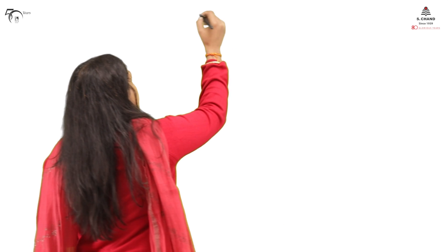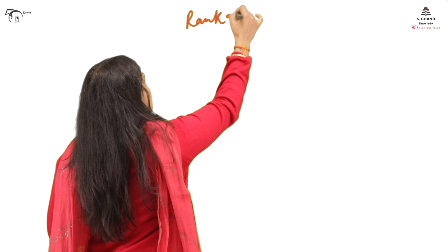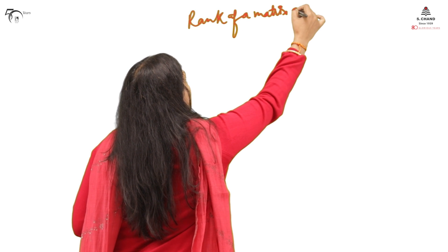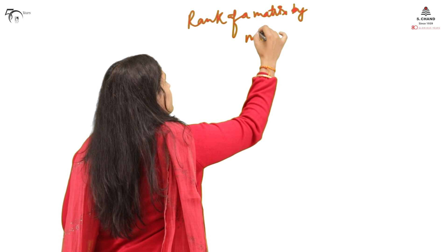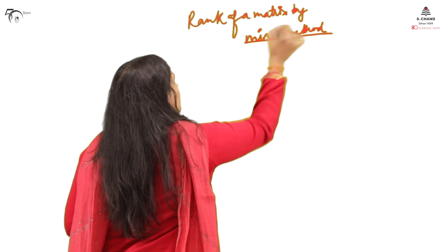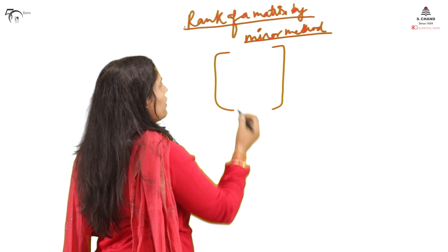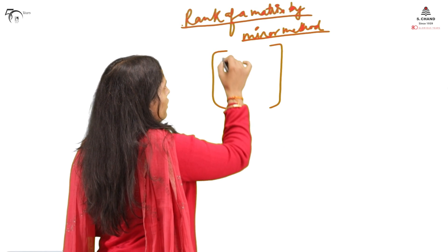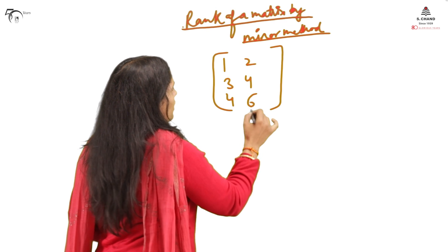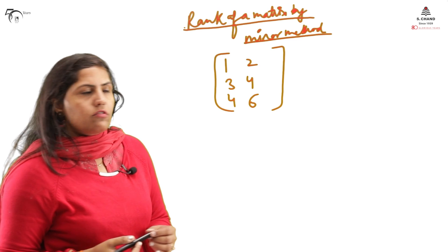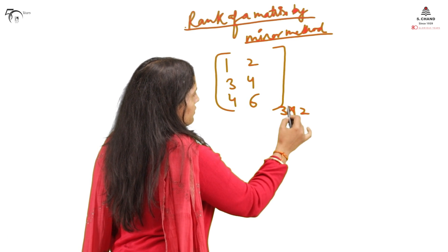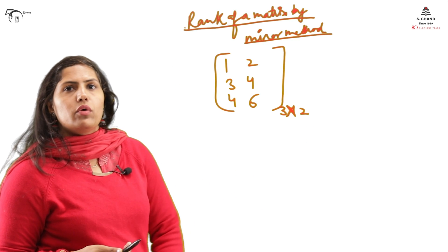As per the definition, we should know minor method. Then I'll discuss a very easy method you can apply when finding rank for any matrix. So rank of a matrix by minor method. I'm considering, because there is no condition on order for finding rank, I'm taking any order. This is a 3 cross 2 matrix.